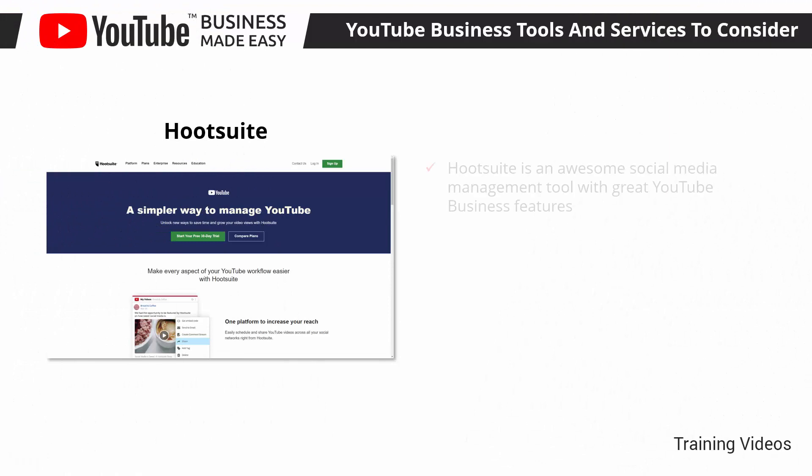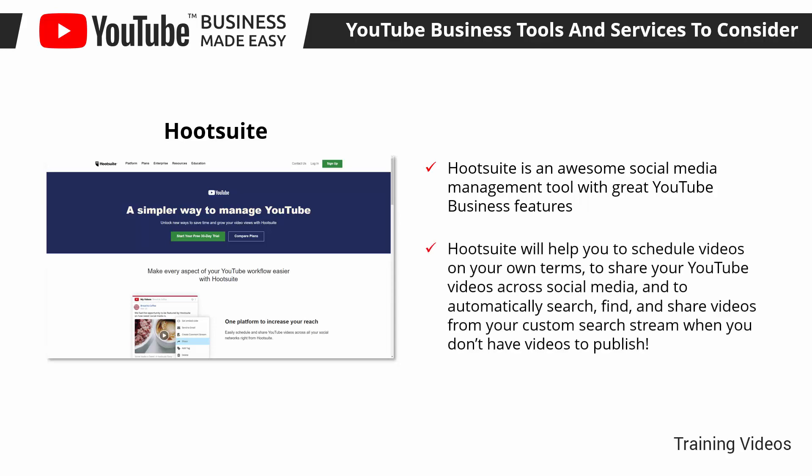Hootsuite is an awesome social media management tool with great YouTube business features. It offers brands and creators a simpler way to manage their YouTube business and unlocks new ways to save time and grow your video views. Hootsuite will help you to schedule videos on your own terms, share your YouTube videos across social media, and automatically search, find, and share videos from your custom search stream when you don't have videos to publish.